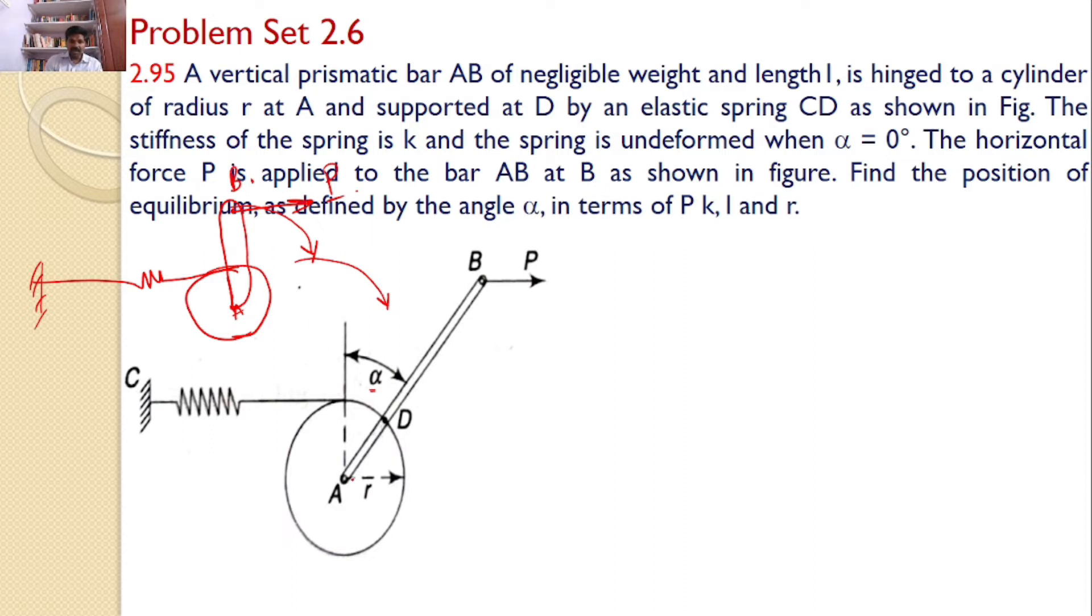So for that, we will consider the free body diagram of the prismatic bar AB. The AB weight is negligible, so weight is not considered.